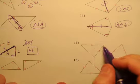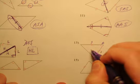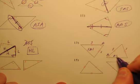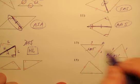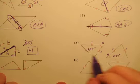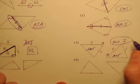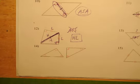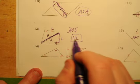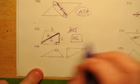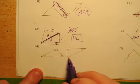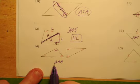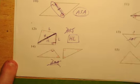In problem thirteen, one triangle shows Side-Angle-Side and the other shows Angle-Side-Side — those don't match up, so even though the triangles look congruent, there's not enough evidence and we say not congruent. Problem fourteen has a right triangle, but looking at the marks we only have three angles — Angle-Angle-Angle — and there's no information about the sides, so AAA will not guarantee congruence.